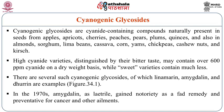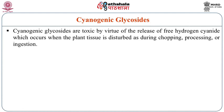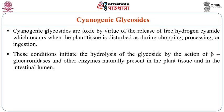In the 1970s, amygdalin gained notoriety as a fad remedy and preventative for cancer and other ailments. Cyanogenic glycosides are toxic by virtue of the release of free hydrogen cyanide, which occurs in plant tissue when disturbed during chopping, processing or ingestion. These conditions initiate the hydrolysis by the glycosidic action of beta-glucosidase and other enzymes naturally present in the plant tissue and in the intestinal lumen.